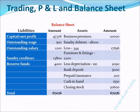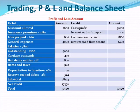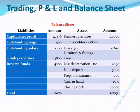On the liability side, we bring forward the net profit or net loss from the profit and loss account. Here we have a net profit of 17,376. That net profit is added to capital, giving us a sum of capital and net profit of 47,376, as per the trial balance and profit and loss account.